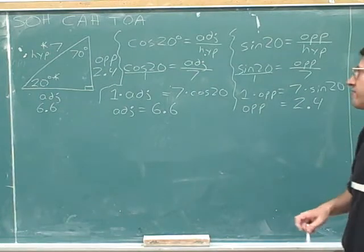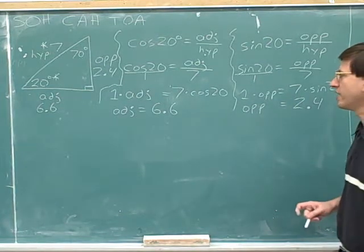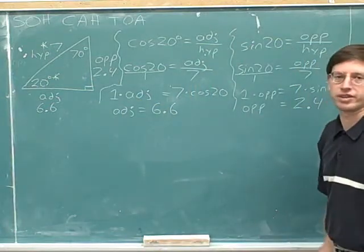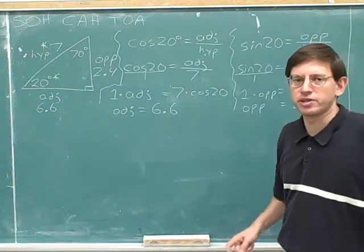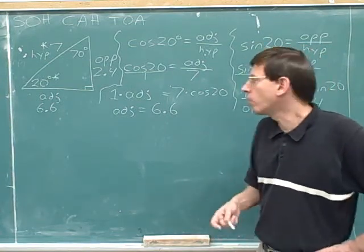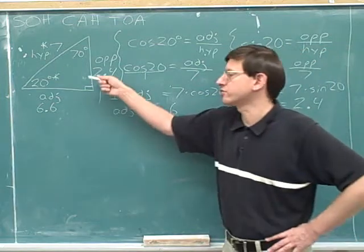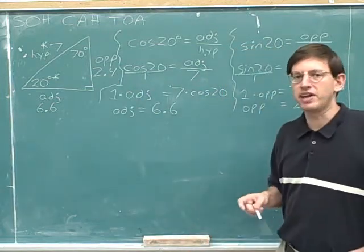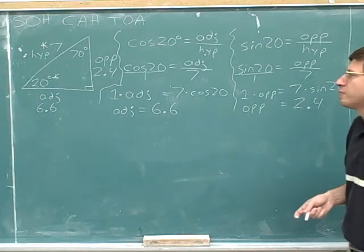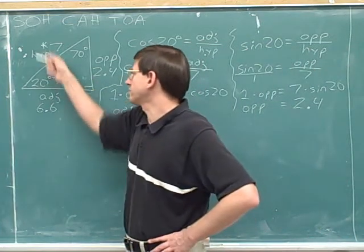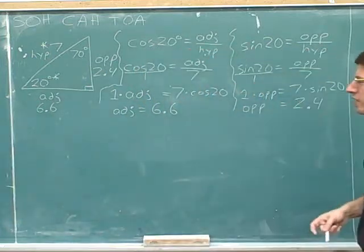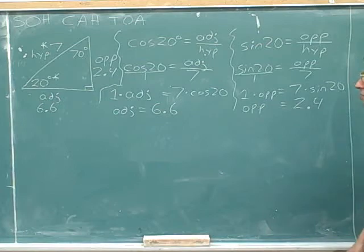Again, there's other ways we could have figured out the same information. There's really a bunch of ways we could have figured out this 2.4. We used the sine to figure out the 2.4. It's also possible to figure out the 2.4 using the Pythagorean theorem, which we haven't covered yet, but you might have heard of. Or we could even use the tangent to find this 2.4. However, the way it's conventionally done is the way that I've done it on the board. The only way that we can figure out the opposite side just using the original given information is to use the sine. So that's the way we're going to be focusing on it. But there are other ways that you could figure out that 2.4.